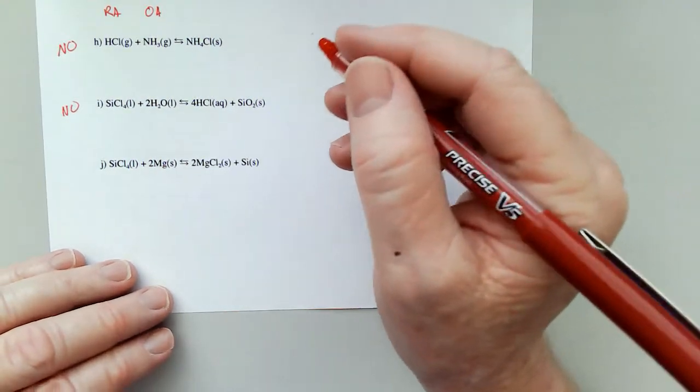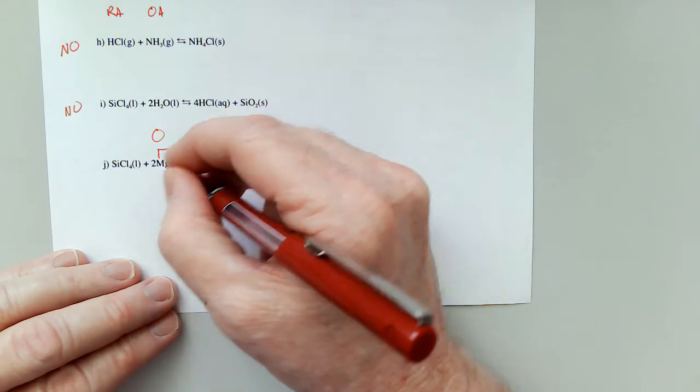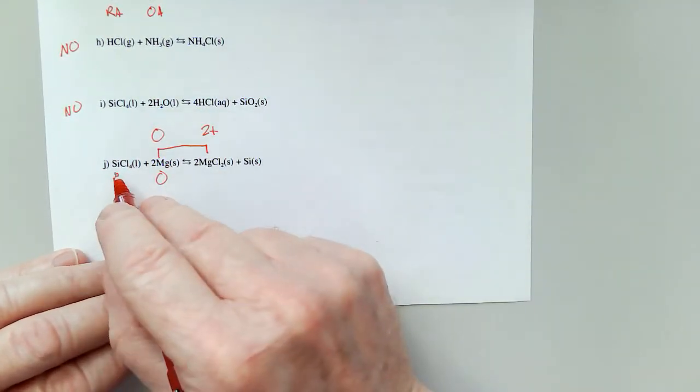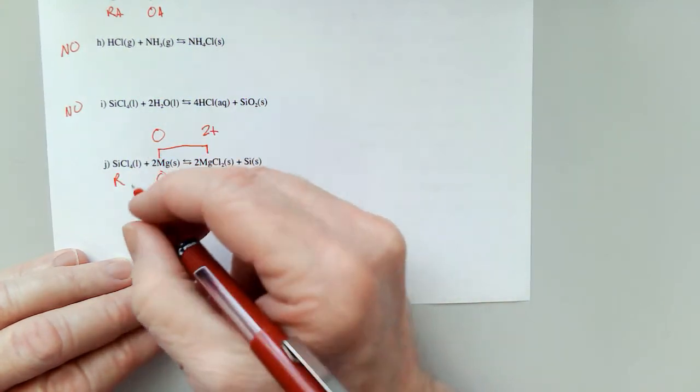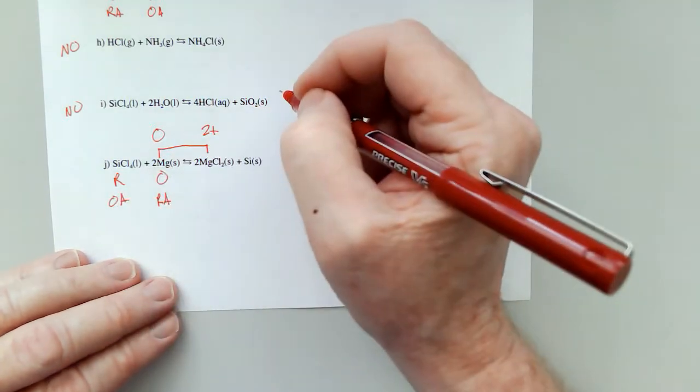Now here's something is changing. The magnesium is going from a zero to a two plus, meaning it's oxidized, so this must be reduced. The silicon is going from a plus four to a zero. That means this is the reducing agent, and this is the oxidizing agent.